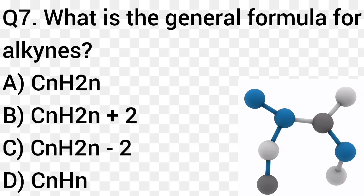Question number 7. What is the general formula for alkynes? Option A: CnH2N. Option B: CnH2N plus 2. Option C: CnH2N minus 2. Option D: CnHN. The right answer is option C, CnH2N minus 2.